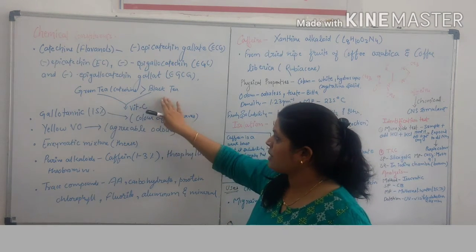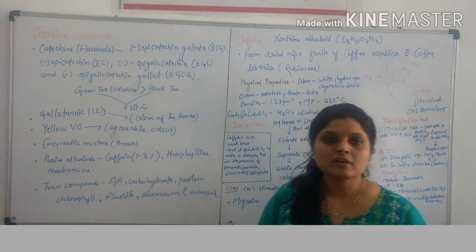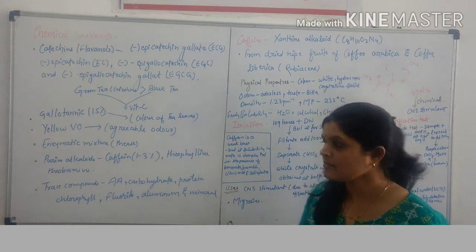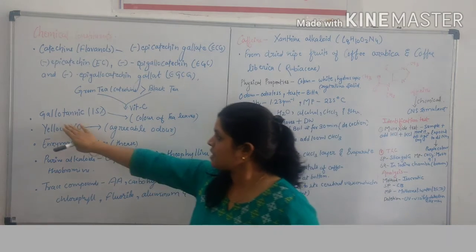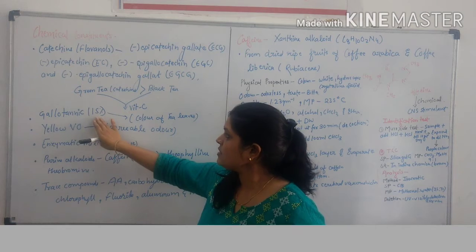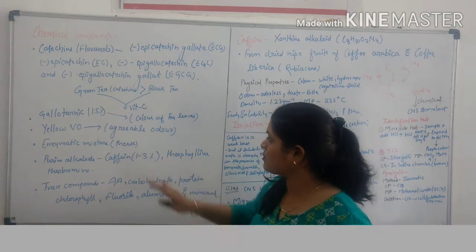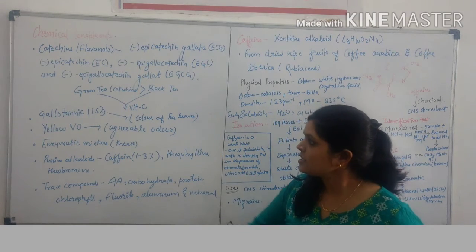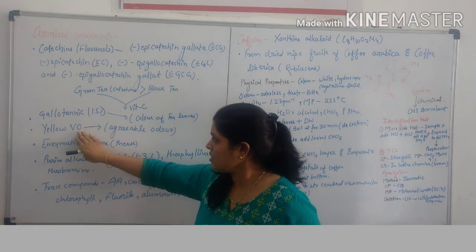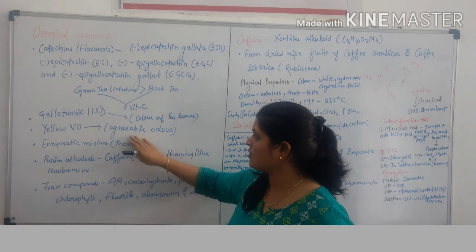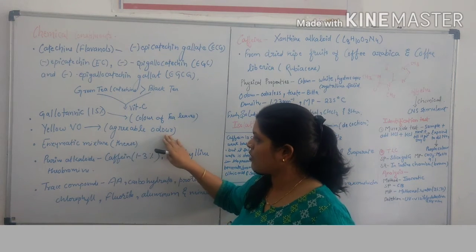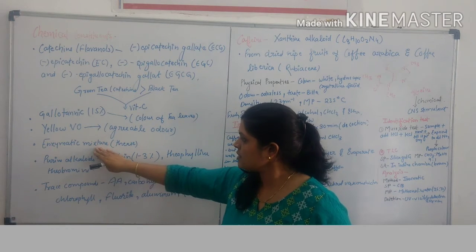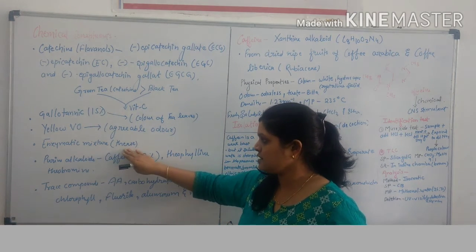Green tea and black tea both are good sources of vitamin C. It contains gallotannin 50% which is responsible for the color of green tea leaves. Yellow volatile oil is also present which is responsible for the agreeable odor. It also contains theaflavin mixture, theine is an enzyme.